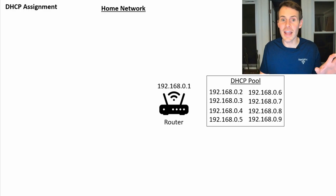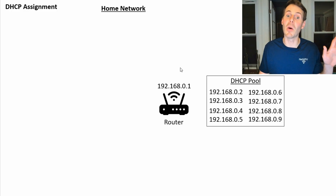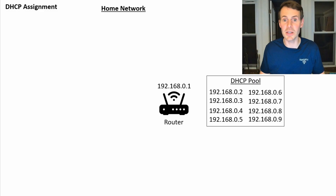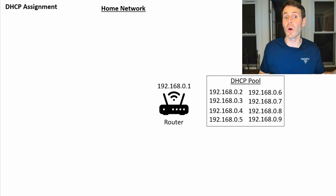So how does DHCP work? I think it's better if we take a look at an example. Here's an example of your home network — it currently doesn't have any devices connected to it. All you have is your router with its IP address at 192.168.0.1. What I want you to take notice of is something called a DHCP pool — the Dynamic Host Configuration Protocol pool. This is basically just a list of available IP addresses that your router can assign to devices when they connect. In many cases, you have a range of maybe 100 or even 200 IP addresses available.